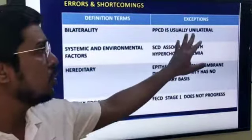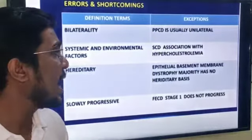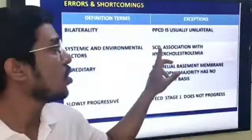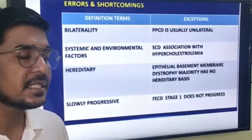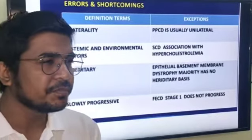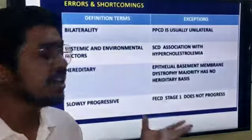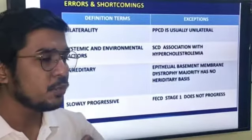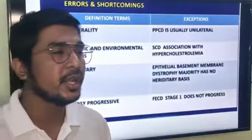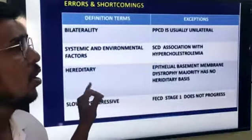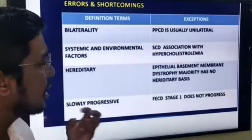The second exception concerns systemic associations. Normally, corneal dystrophy should not have a systemic or environmental association, but Snyder Corneal Dystrophy is associated with hypercholesterolemia. If a patient has hyperlipidemia or hypercholesterolemia along with a corneal dystrophy, we can expect it to be Snyder Corneal Dystrophy.